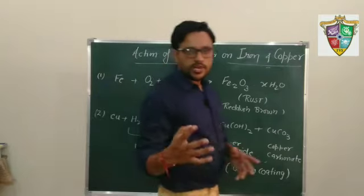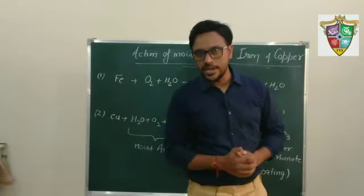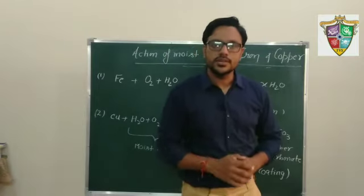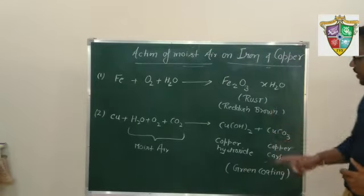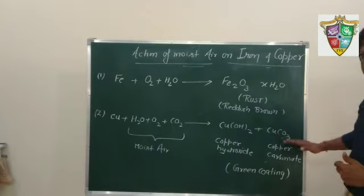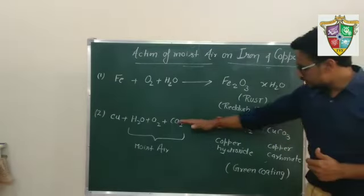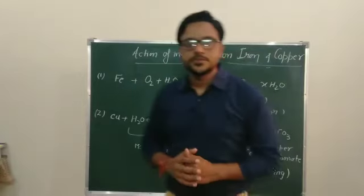So when copper vessels at your homes are left exposed in air, they get a green coating. That is rust of that copper. And the formula for that rust is copper hydroxide and copper carbonate. This is the reaction that takes place in case of copper and iron. Thank you.